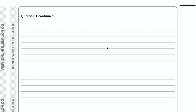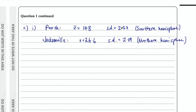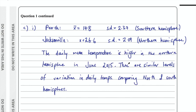Write down the actual measurements so you can clearly compare them, then which hemisphere each one belongs to. The daily mean temperature is higher in the northern hemisphere in June 2015. There are similar levels of variation in daily temperatures comparing north and south hemispheres. My suggestion is to make a comment on both the means and the standard deviations to get those two marks.